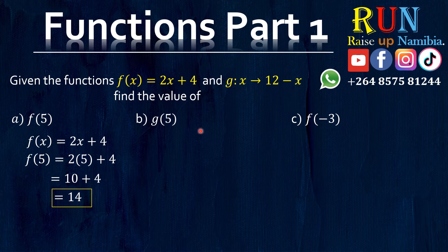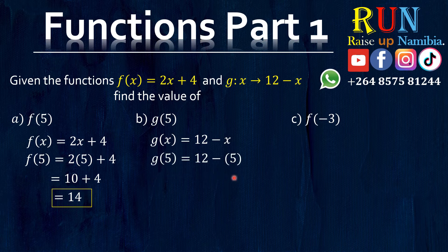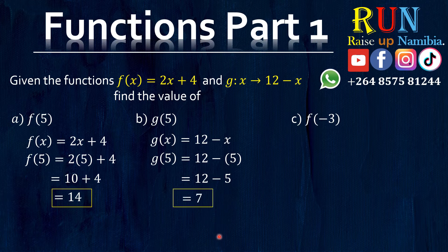Now to make life easy, when you are solving something like this, change it to this notation. So you can change this function to this notation by writing it as G of X equals to 12 minus X. And then from here, you can do what we did in A, which is substitute the 5 wherever you see an X. So let's do just that. We know already that 12 minus 5 is equals to 7. And that's our final answer for B.